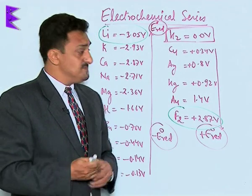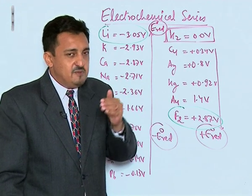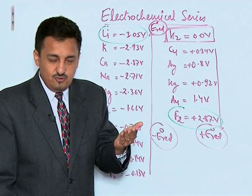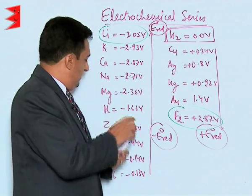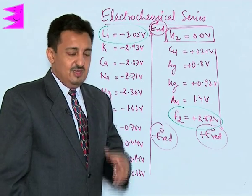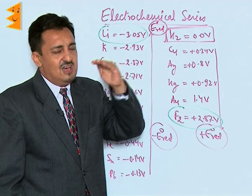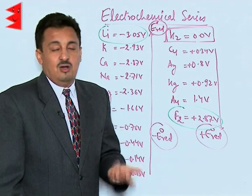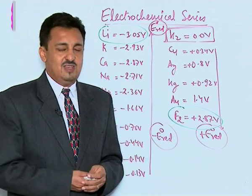The third application: species with lower E0 reduction potentials can reduce species with higher E0 reduction potentials, thereby displacing them from their salt solutions. For example, zinc lying above iron in the series can displace Fe²⁺ from ferrous sulfate solution — zinc reduces Fe²⁺ and is itself converted to Zn²⁺ ions. The reverse is not possible because it would be a non-spontaneous reaction and will not occur on its own.